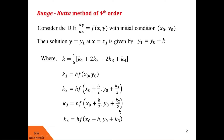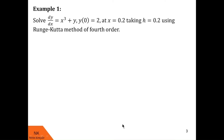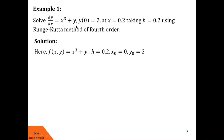Now let us see an example to understand this concept. We are asked to solve the differential equation dy/dx = x³ + y with initial condition y(0) = 2 at x = 0.2, taking h = 0.2, using the Runge-Kutta method of fourth order. We note down the given data: f(x, y) = x³ + y, h = 0.2, x₀ = 0, y₀ = 2.